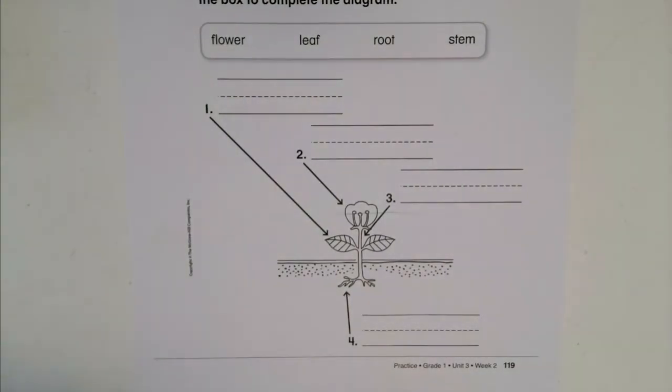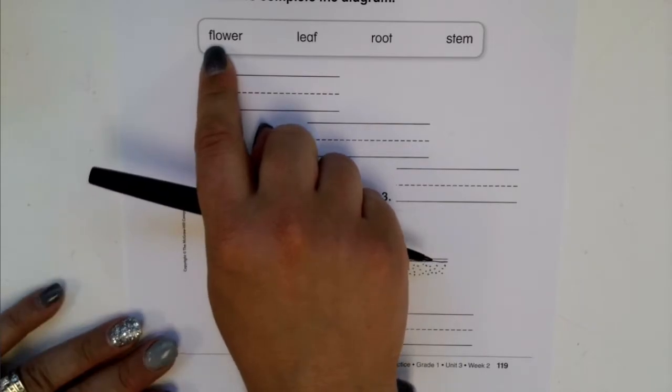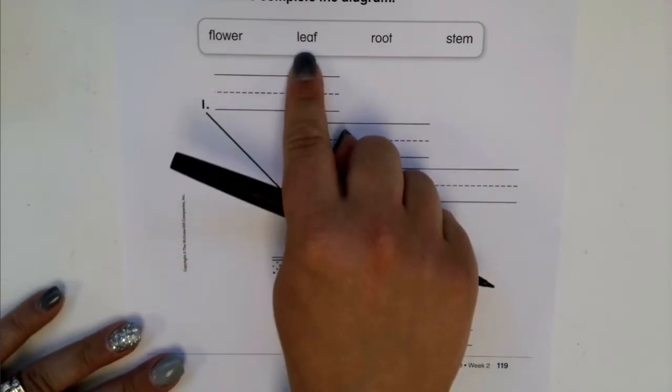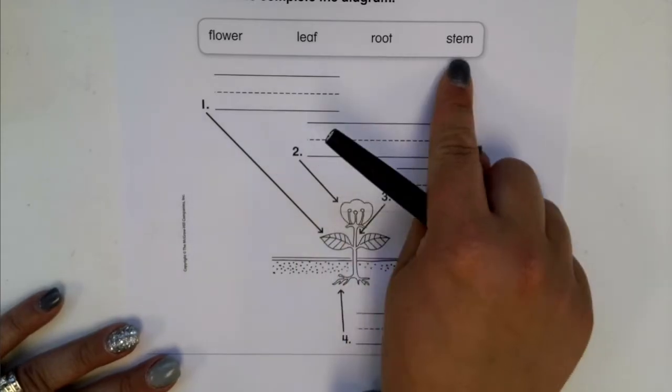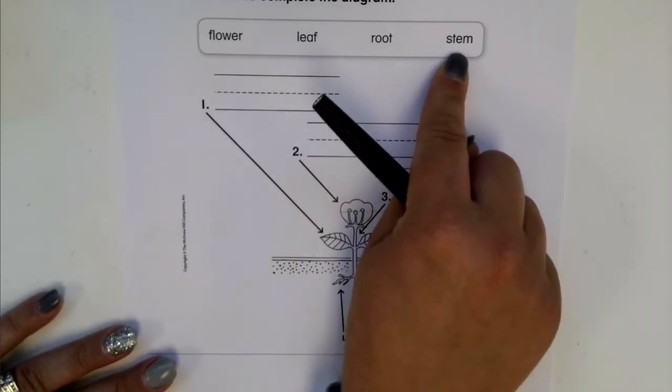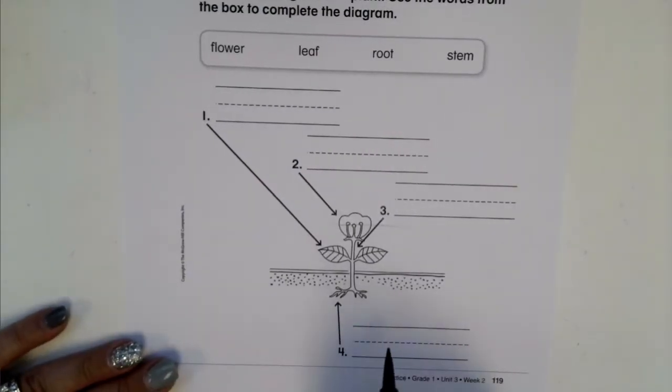Okay, so here are the words that we have: flower, leaf, root, stem. All right, now we need to figure out which words go with what.